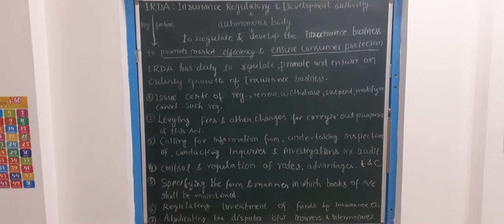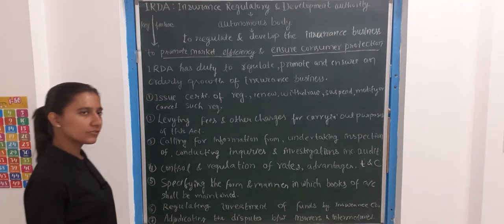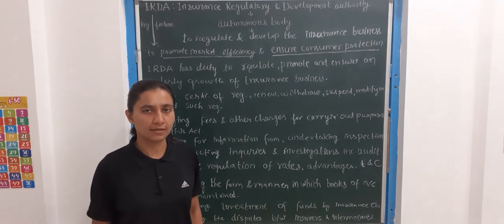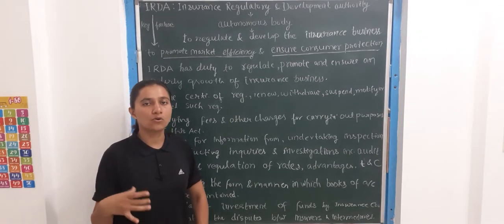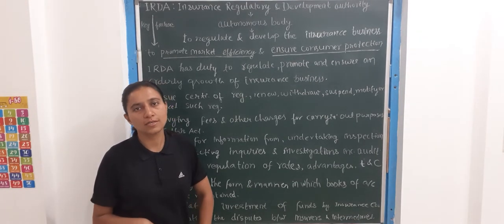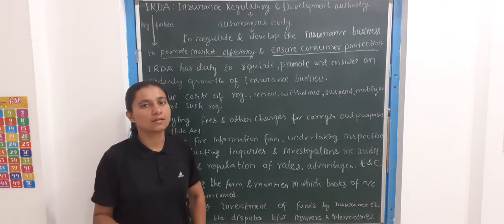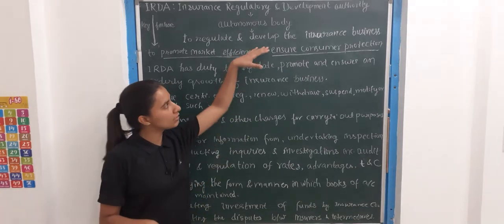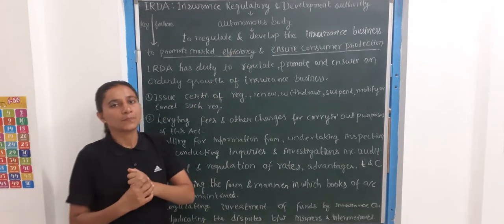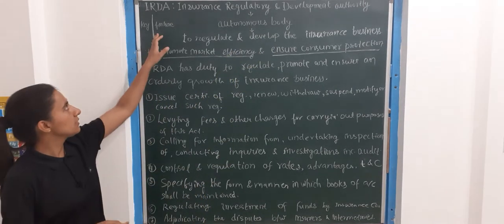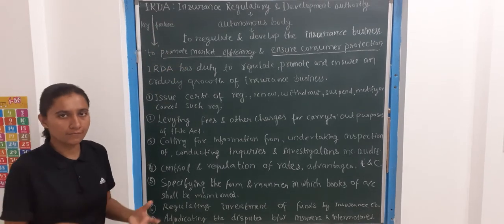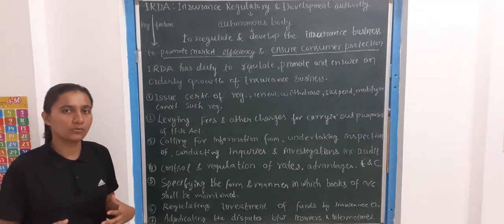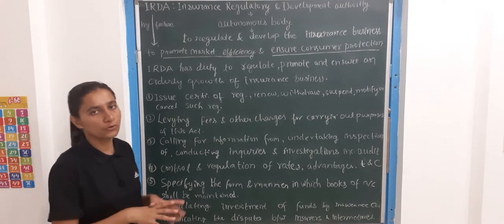Hello everyone. In this video we will talk about the Insurance Regulatory and Development Authority, which is an autonomous body. It was formed to regulate and promote the insurance business. The key feature of IRDA is to promote market efficiency and ensure consumer protection.